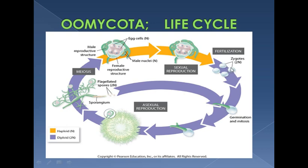These zygotes then transform into oospores — and the oospore is the reason for naming this group Oomycota. They have fungi-like characters as well as some plant-like characters; for example, the cell wall is composed of cellulose instead of chitin. In Oomycota, both plant parasites and animal parasites are found. Plant parasites include Phytophthora infestans, which causes potato blight disease, whereas animal parasites cause fuzz on fish.